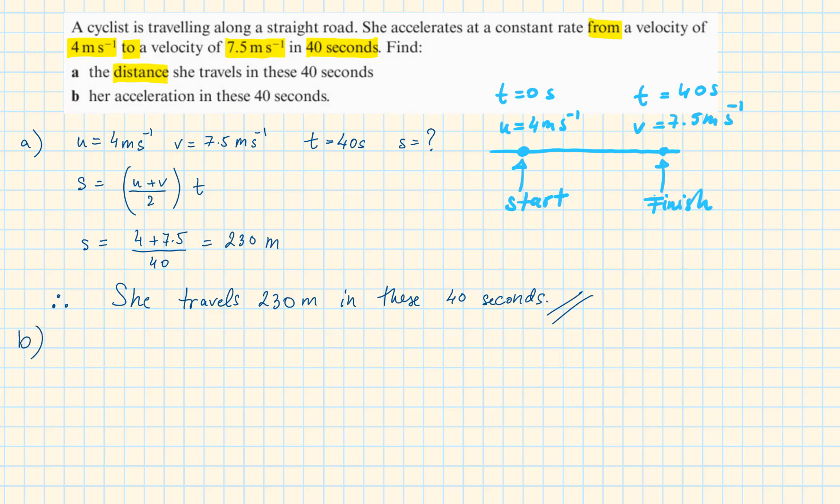For part B, we need to find the acceleration. Using the formula V equals U plus AT, replacing the V, U and T and rearranging, we get A is equal to 0.0875 meter per second squared.